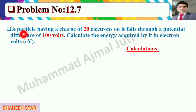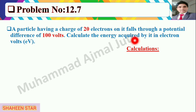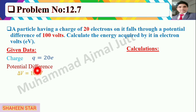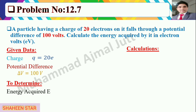The statement says: a particle having a charge of 20 electrons on it falls through a potential difference of 100 volts. Calculate the energy acquired by it in electron volts. The given data is: charge of 20 electrons, potential difference delta V is equal to 100 volts, and we need to find the energy acquired by the electrons in electron volts.